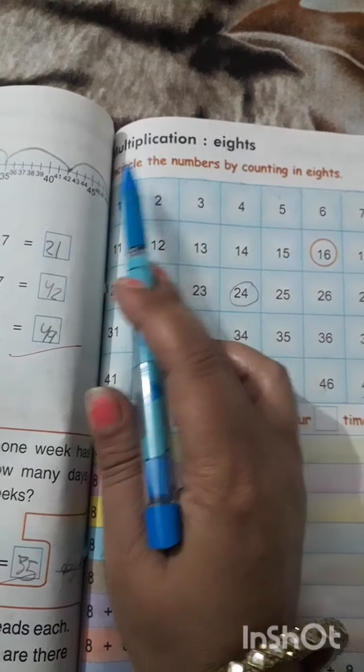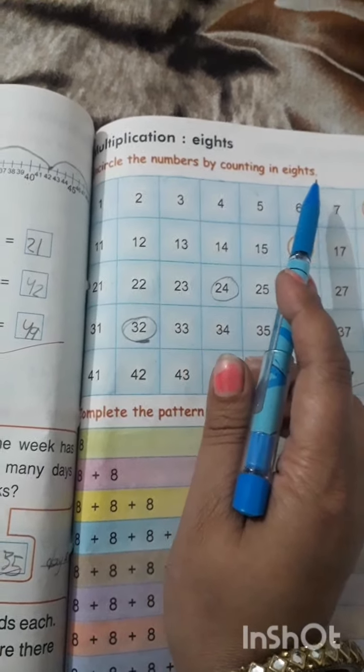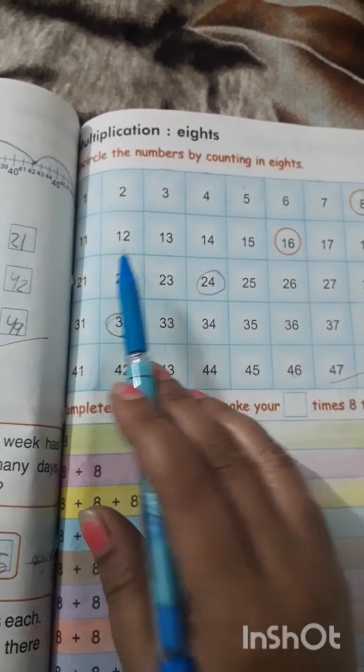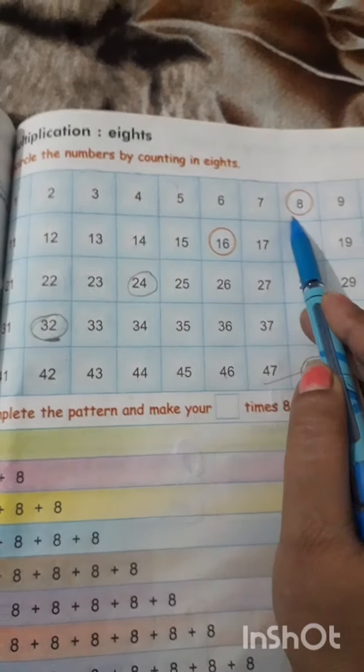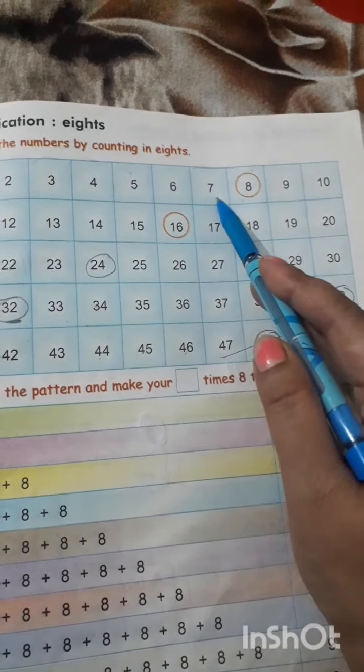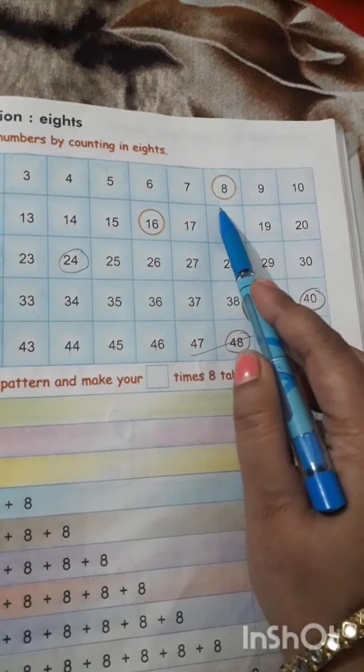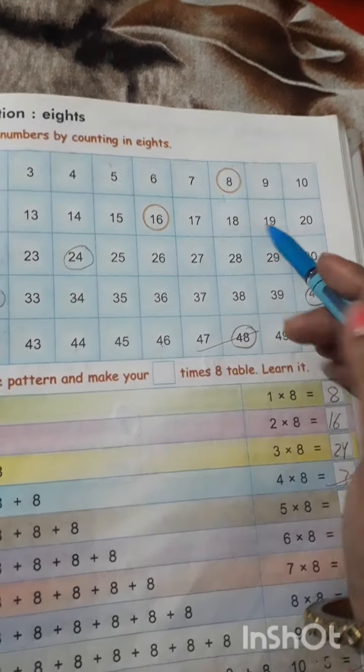Multiplication 8s. Encircle the numbers by counting in 8s. We have to encircle every 8 number. You have to skip 7 numbers like this. And we will encircle the number 8 here.